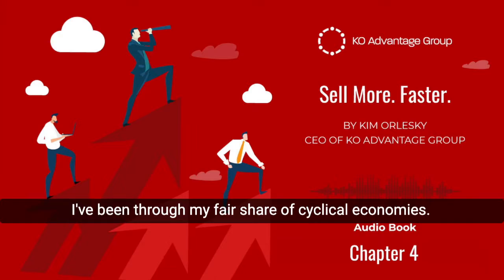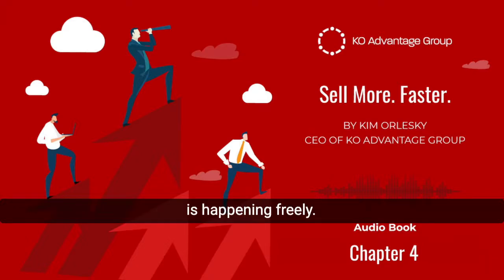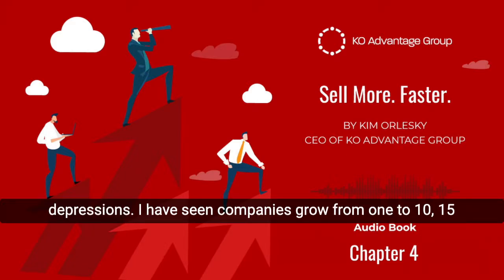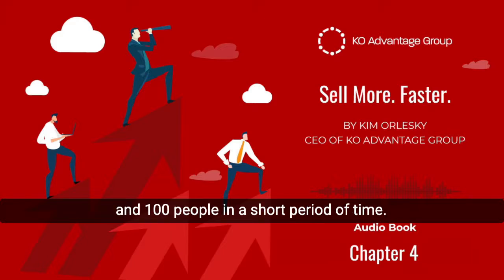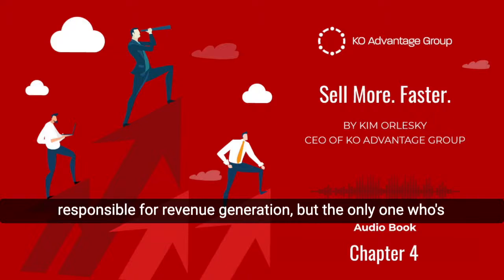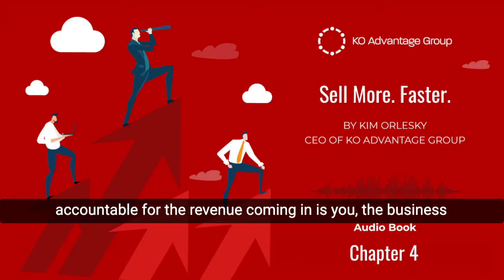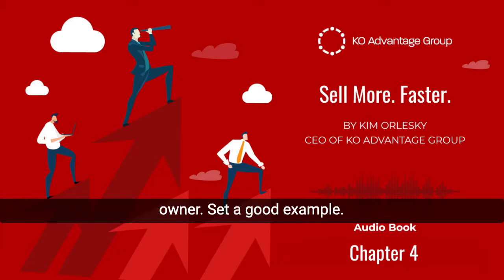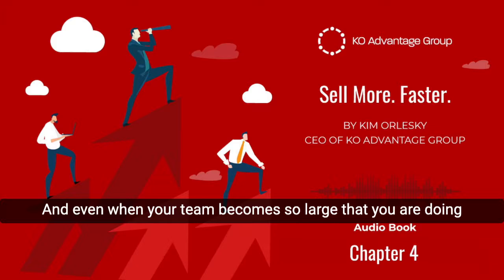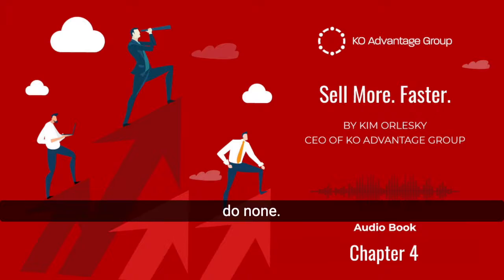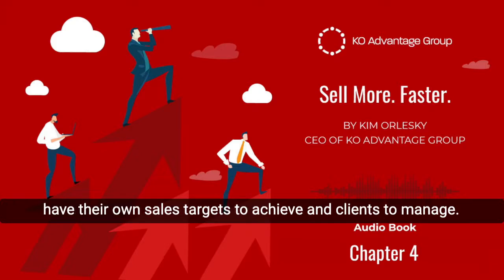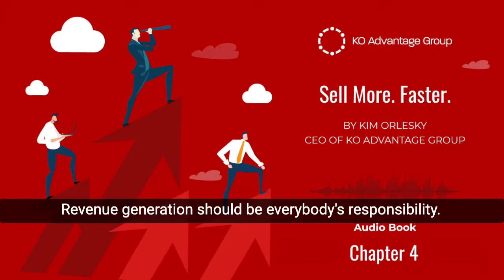I've been through my fair share of cyclical economies. I know that there are great times — bullish markets and spending is happening freely. There are also down times: the bearish market, recessions, and depressions. I have seen companies grow from 1 to 10, 15, and 100 people in a short period of time. I have also seen those same companies lose half their staff because of the loss of revenue. You may be fortunate to have hired others to help you become responsible for revenue generation, but the only one who's accountable for the revenue coming in is you, the business owner. Set a good example. Tell your team what you expect of them. Help them develop great habits because it's worked for you. And even when your team becomes so large that you are doing less of the revenue generation, it doesn't mean you should do none.